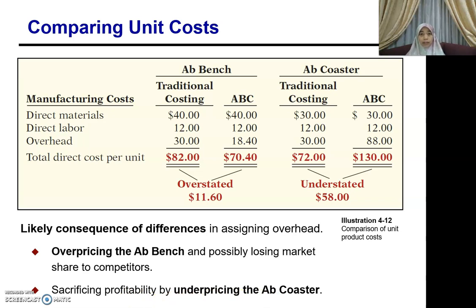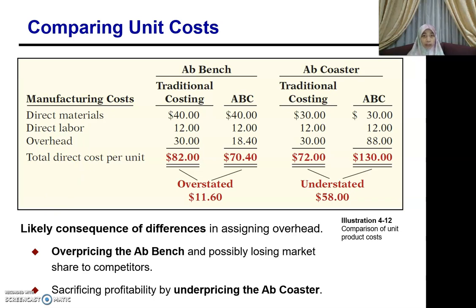That is the consequence — and that is basically the benefit of using activity-based costing. When you assign your overhead cost to your product, it reflects a more accurate cost. ABC gives you more accurate costing information leading to more accurate pricing decisions. It also helps identify activities, supporting better management decisions and helping you eliminate non-value-added activities while directing resources toward value-added activities.